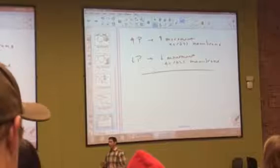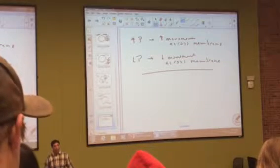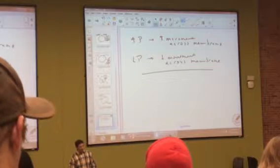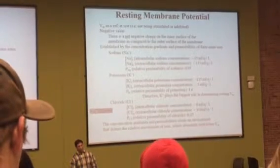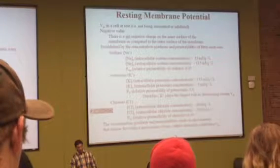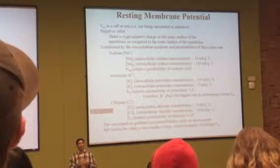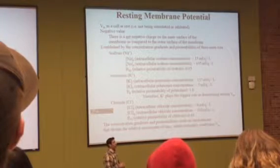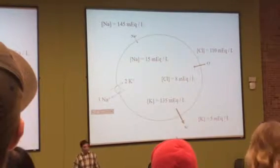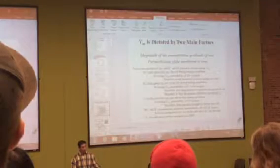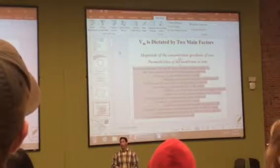So a bunch of facts to start off. Now that we have all these facts, now that we've established many of the things that we need to understand membrane potential, let's see how it's done. You have to know these values like the back of your hand. The concentration gradient and the permeabilities create an environment that dictates the movement of these ions across the membrane. The concentration gradient will dictate which way they move.